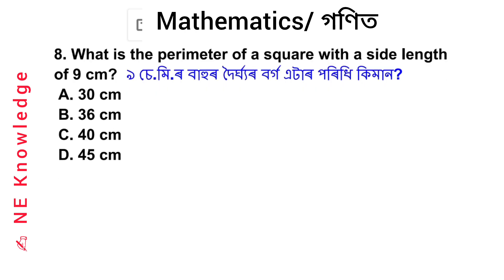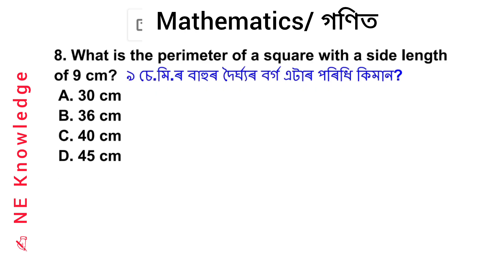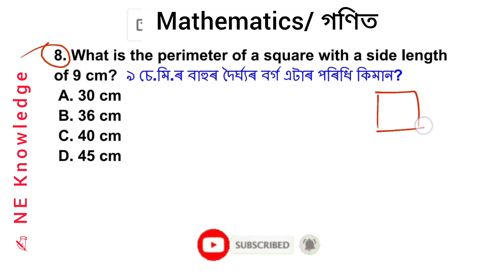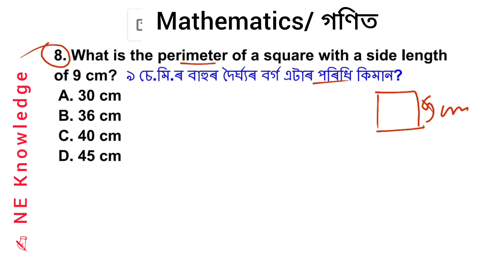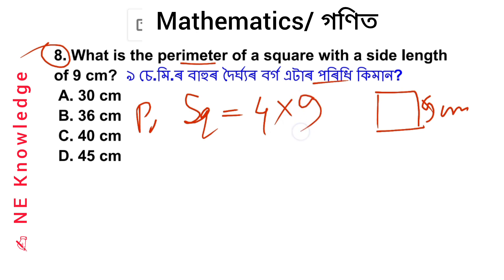Question number 9: What is the perimeter of a square with a side length of 9 cm? The perimeter of a square is equal to 4 × side. So 4 × 9 = 36 cm. Option number B is correct.